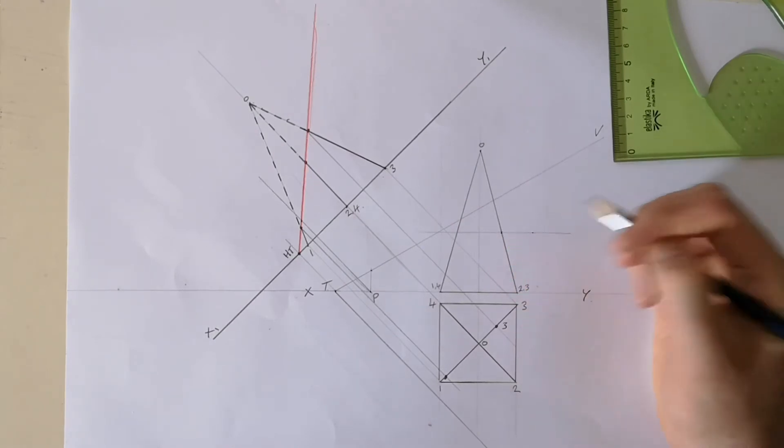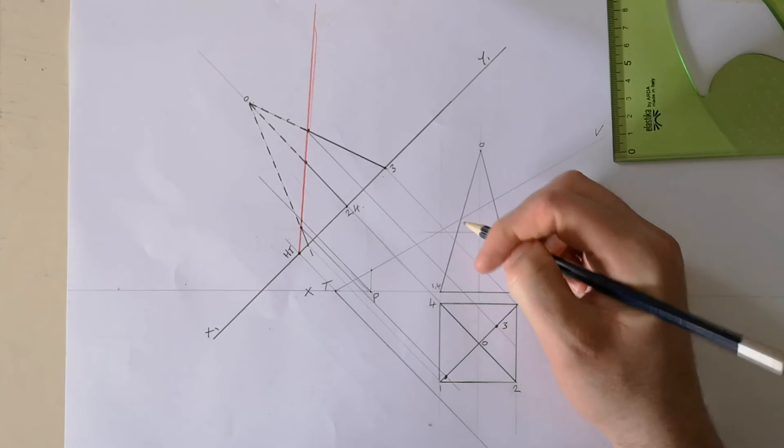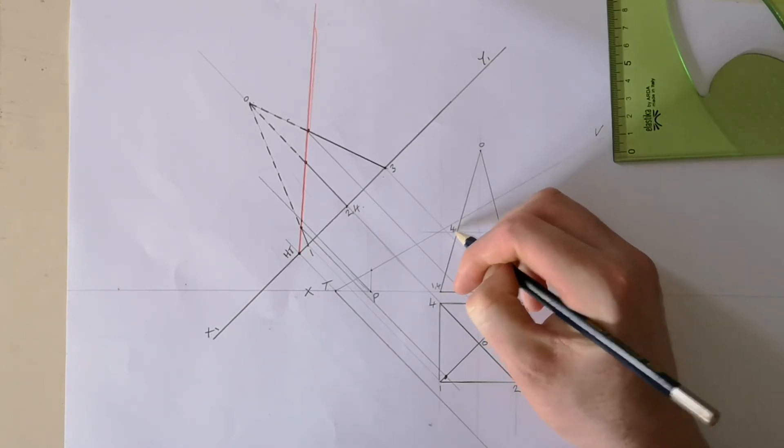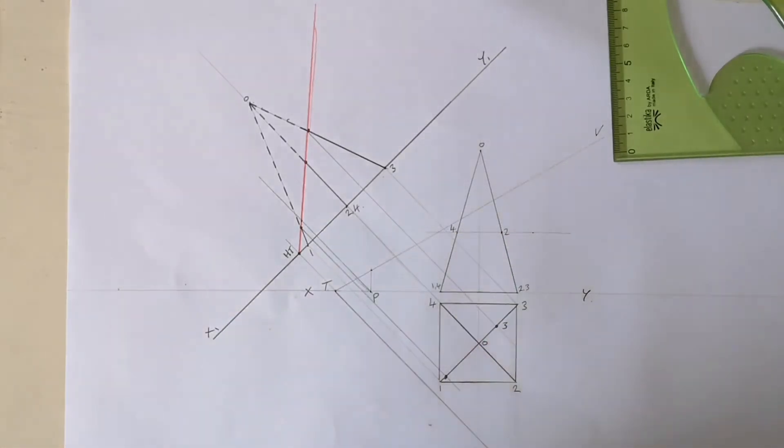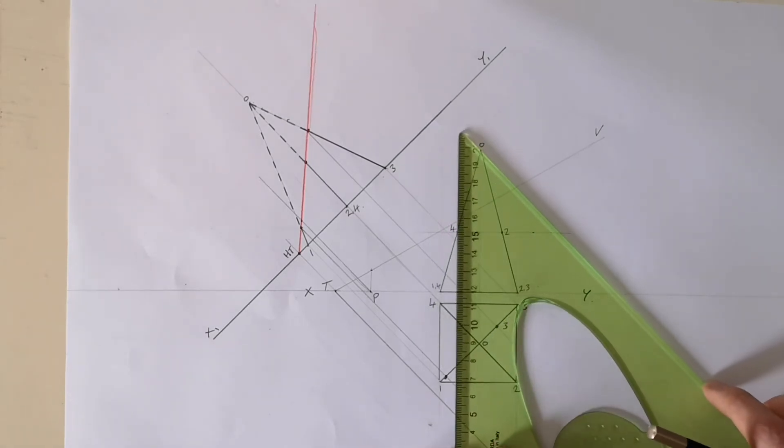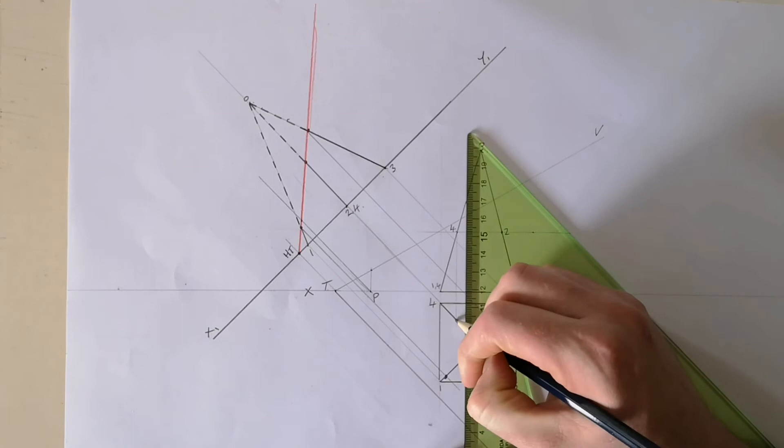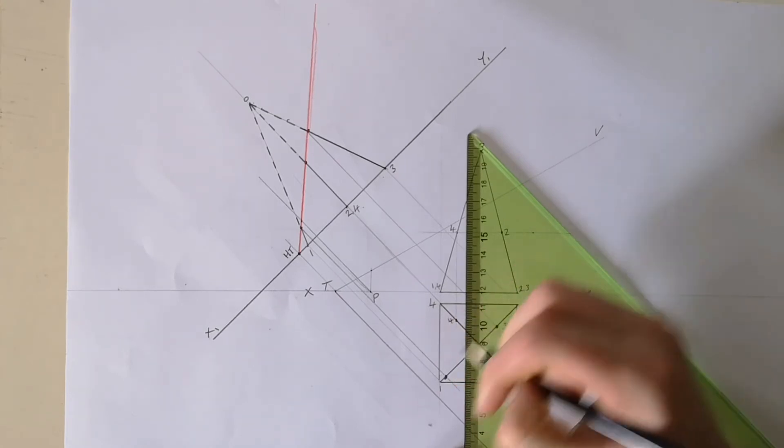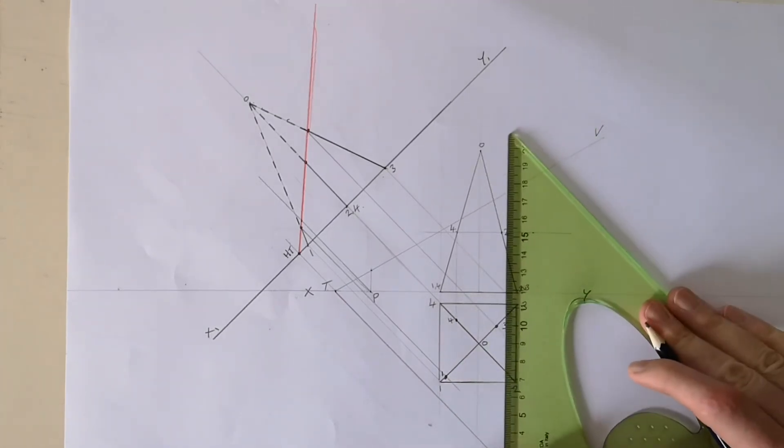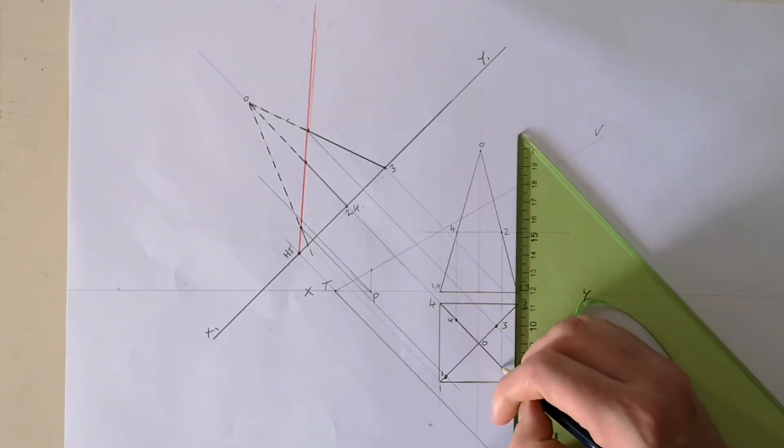I know now that it strikes three here, or sorry, two, and it strikes four here. So using those two points in the elevation, I'll be able to bring them straight down. Four here, and two down here at the bottom.